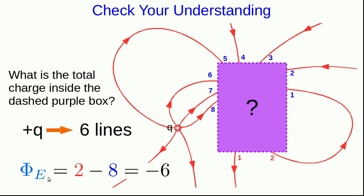And so our total flux is two minus eight, or negative six. And since six lines corresponds to positive q, negative six corresponds to an enclosed charge of negative q inside this surface.